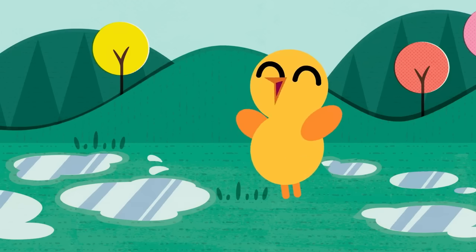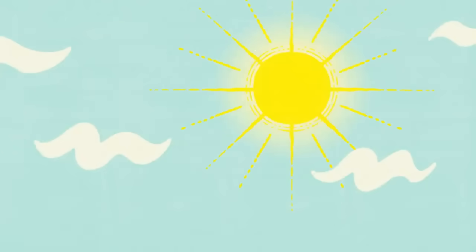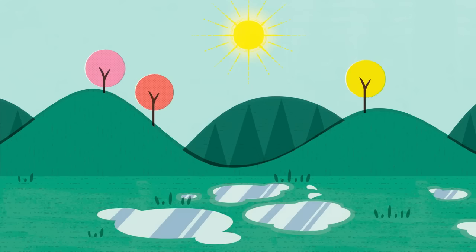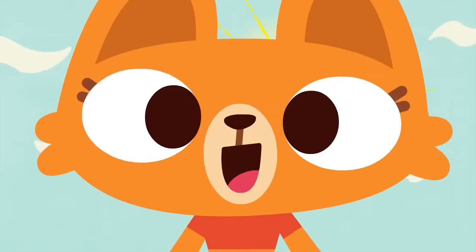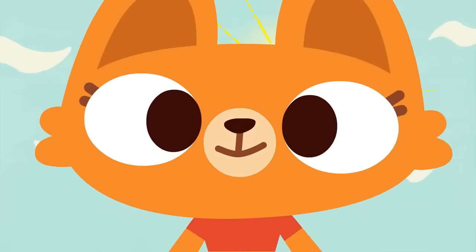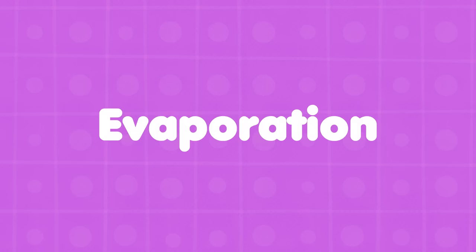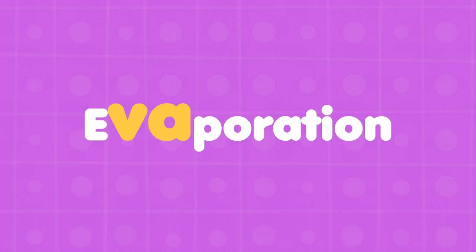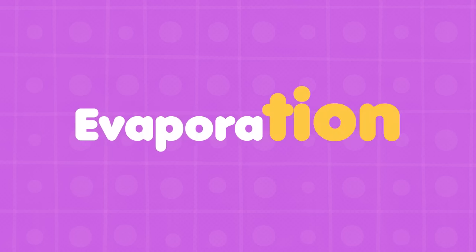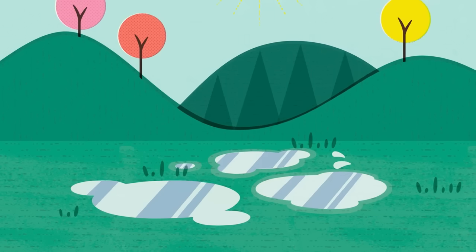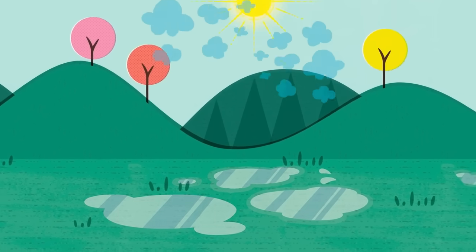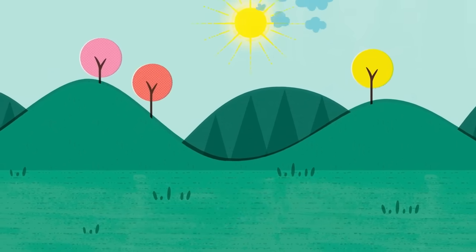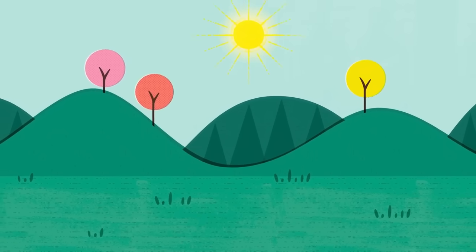Well, let's look at this puddle. Today is sunny, so tomorrow the puddle might be gone. Where will it go? It will dry up! Right, Lisa. That's called evaporation. Say it with me: E-va-po-ra-tion. Tiny amounts of water go into the air until all of the water in the puddle is gone. It's happening right now, even though you can't see it.